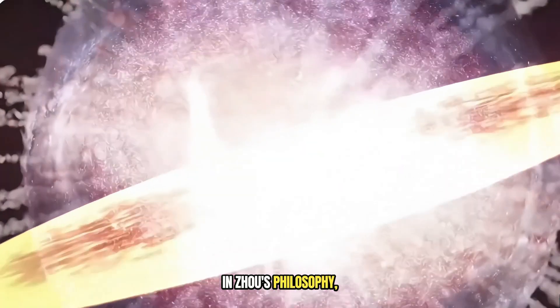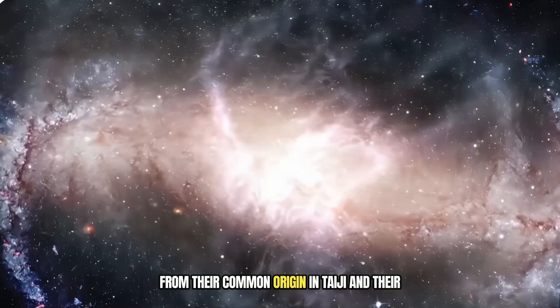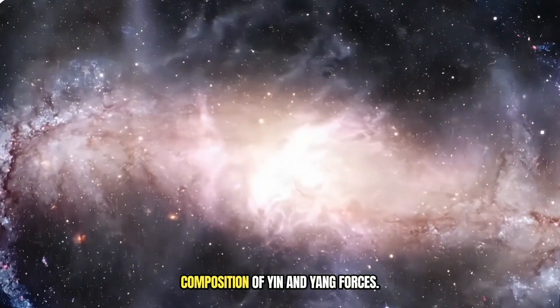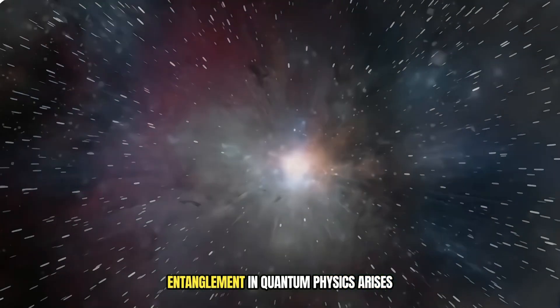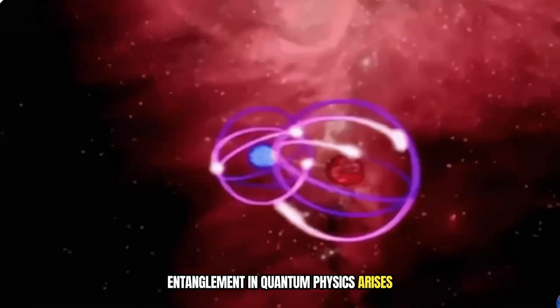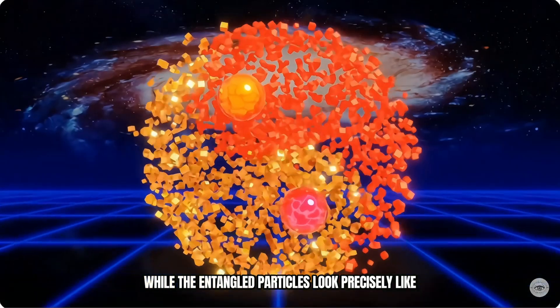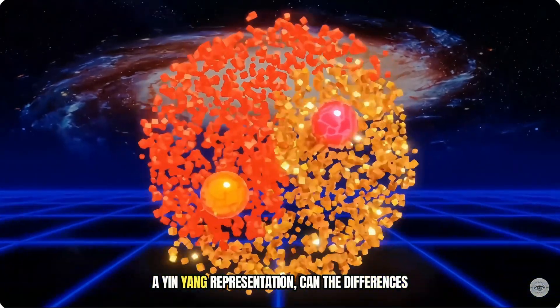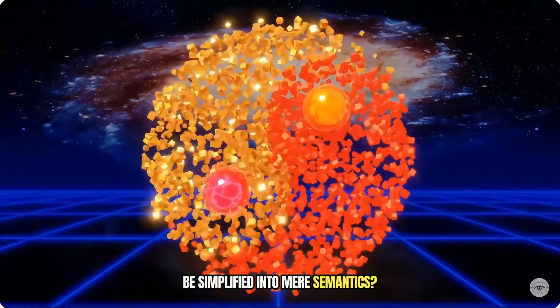In Zhou's philosophy, the interconnectedness of all things stems from their common origin in Taiji and their composition of yin and yang forces. Instead of two opposing forces, entanglement in quantum physics arises from specific interactions between particles. While the entangled particles look precisely like a yin-yang representation, can the differences be simplified into mere semantics?